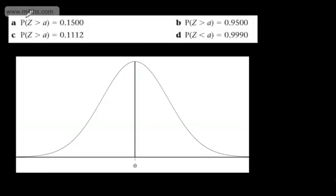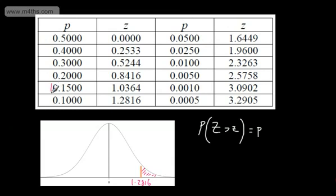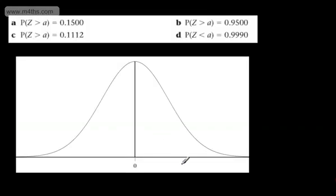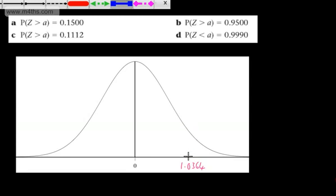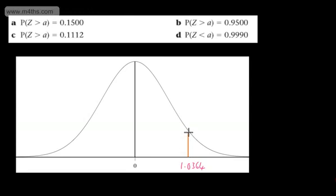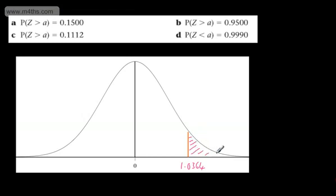We're told the probability of z being greater than a is equal to 0.1500. We need to find the value of a. Going to the table, the probability is given as 15% or 0.15. Therefore, the corresponding value of z is going to be 1.0364. The probability that our continuous random variable is greater than this value is 0.15 or 15%, which is that little area enclosed under the curve to the right of the line.